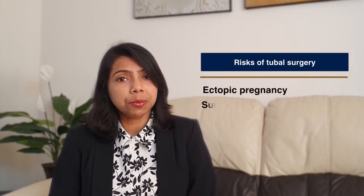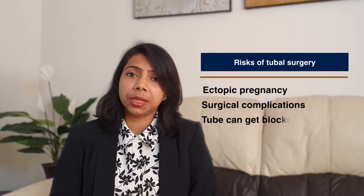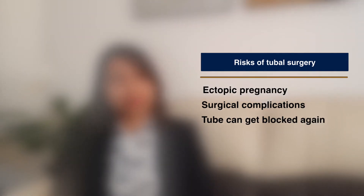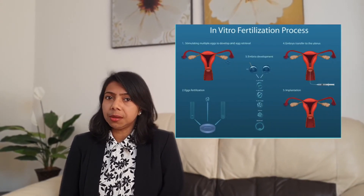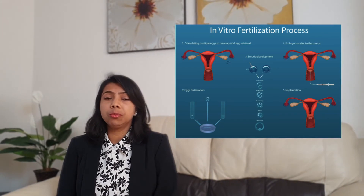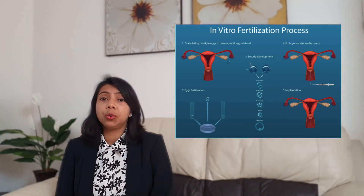If both tubes are blocked, then the options are surgery or IVF. Surgery cannot be done in all cases — it is only possible if the block is minimal and the majority of the tube looks healthy. However, after surgery there is increased risk of ectopic pregnancy, surgical and anesthetic complications, and the tubes can get blocked again. IVF is preferred if you have other causes of infertility, like abnormal semen parameters, or you have been trying for a long duration, or if the tubes are badly damaged beyond repair. In that case, do not waste time trying to fix the tubes — move on with IVF sooner. Delaying IVF will only reduce your chances of success.